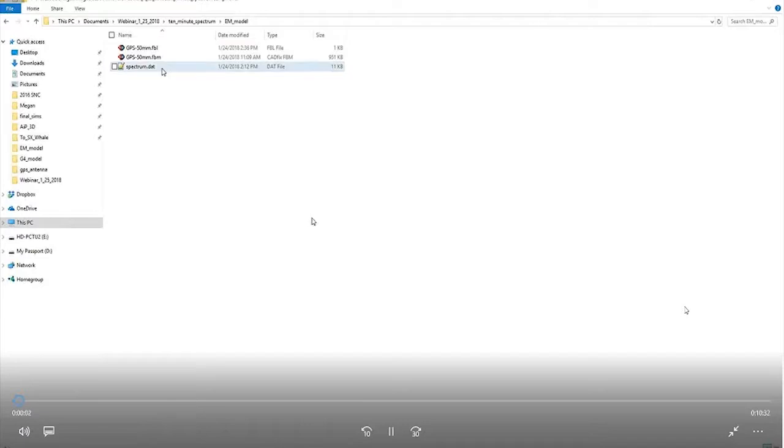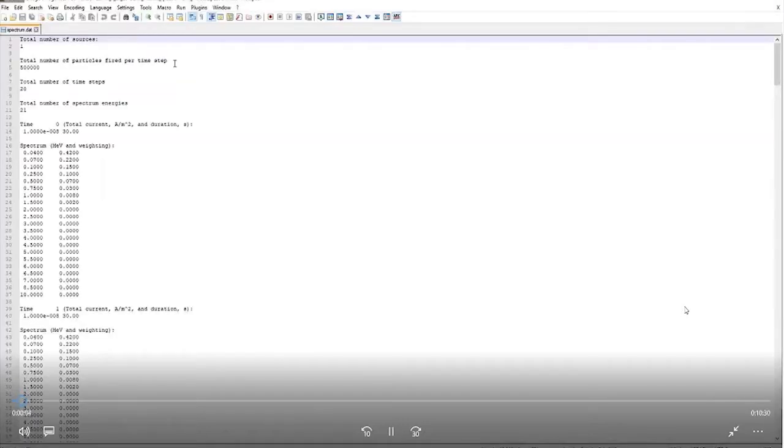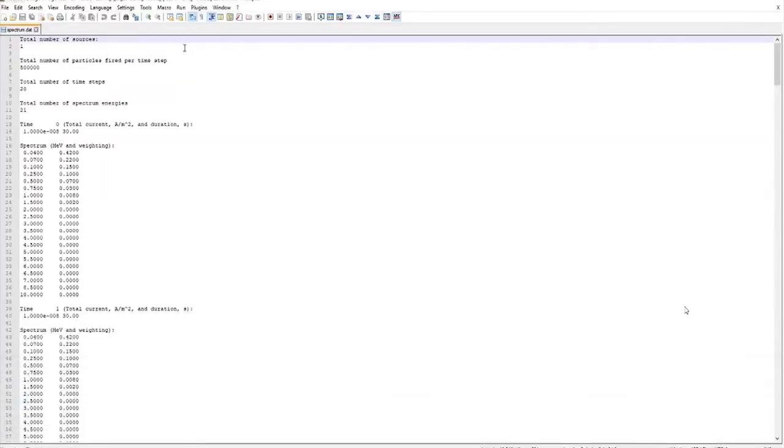So, first I'm going to show the spectrum that I used for this simulation. As you can see, I have the one planar source that I mentioned earlier. I'm firing 500,000 particles per time step, which is something I deemed appropriate given the size of the problem. And then, I'm running a ten-minute simulation, so 30-second time steps for a total of 20 time steps, and an overall current of 1e to the minus 8 amps per meter squared.